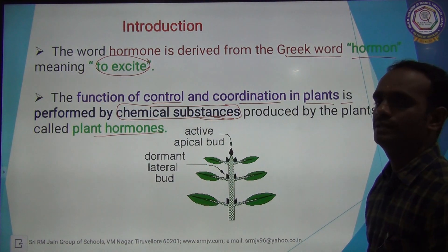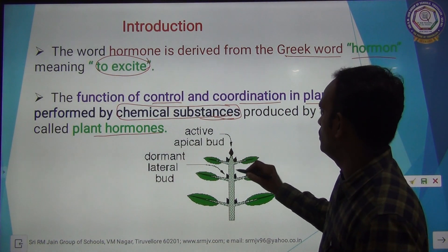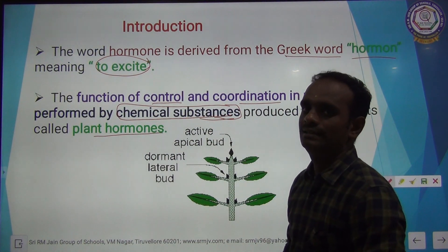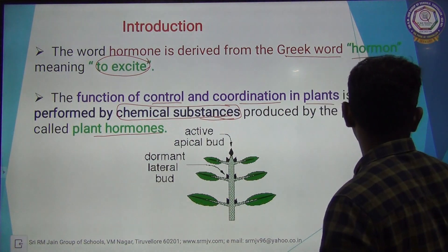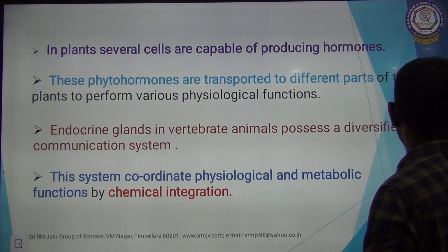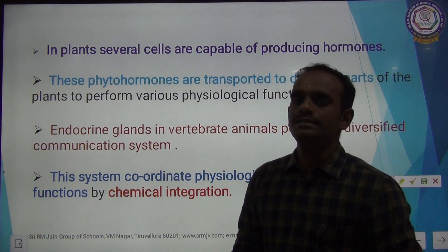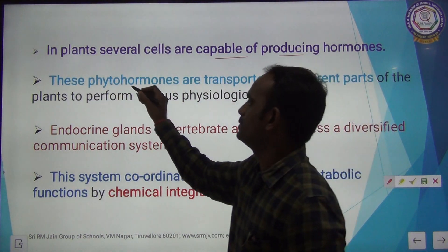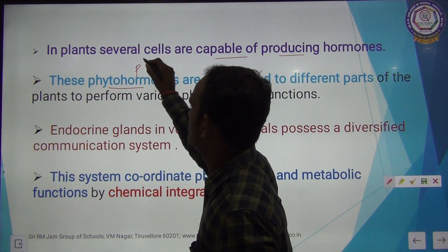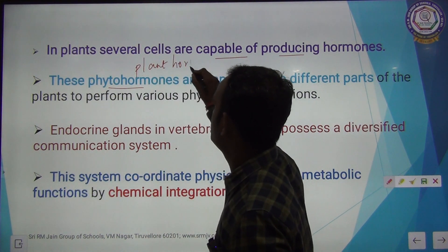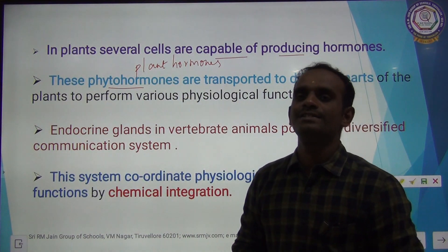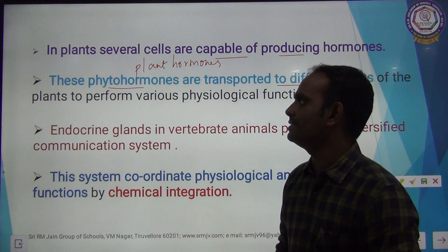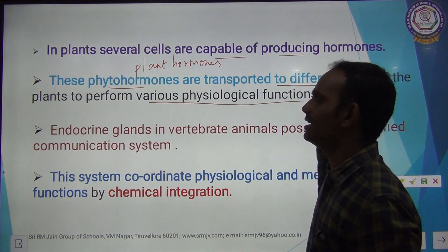Think that it is a plant. In that plant, the functions and coordination in plants is performed by the chemical substance which is released in the plants — that is called plant hormone. In plants, several cells are capable of producing hormones. These phytohormones — phytohormones is nothing but plant hormones — are transported to different parts of the plant to perform various physiological functions.